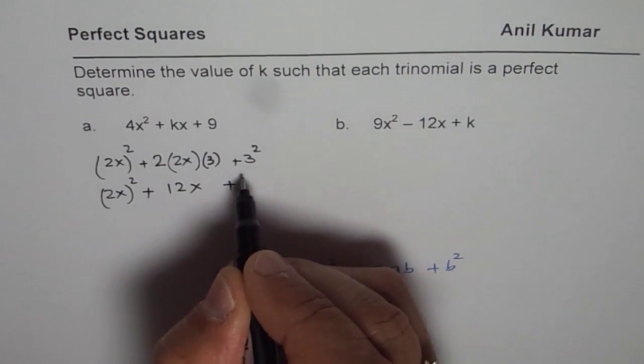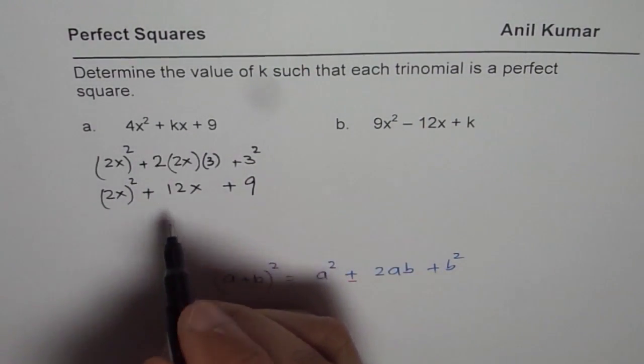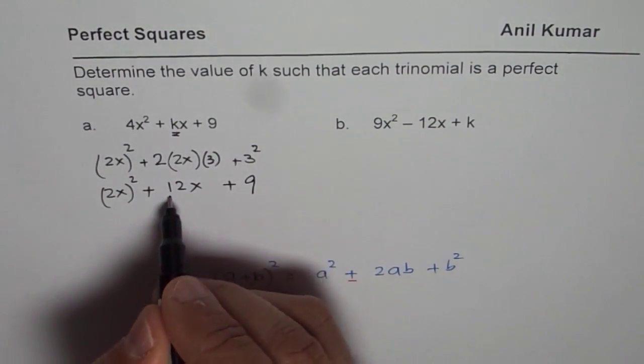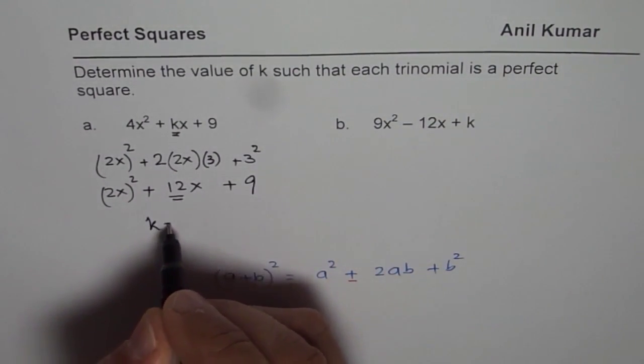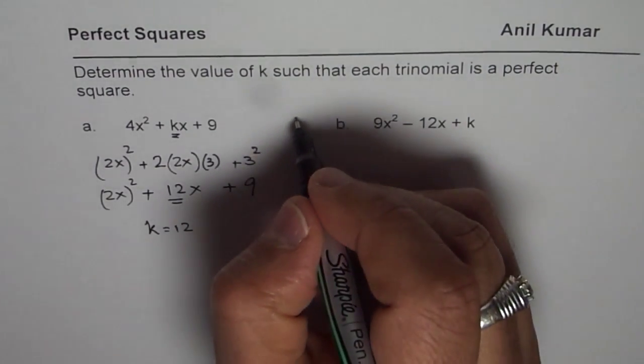You get 12x plus, well, 3² is 9, right? So comparing, we know the value of k should be equal to 12. So we get k = 12 for part a. So that is the strategy.